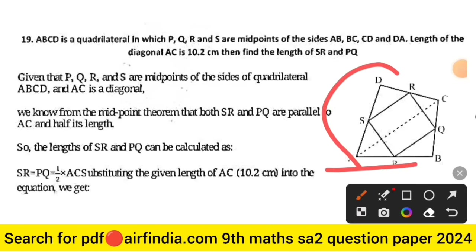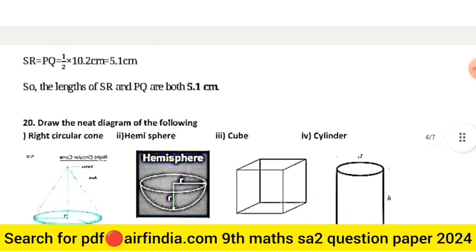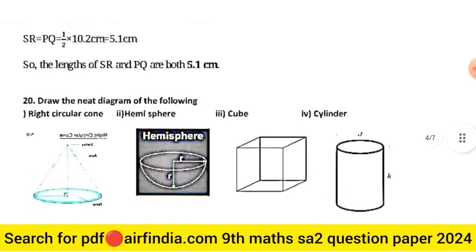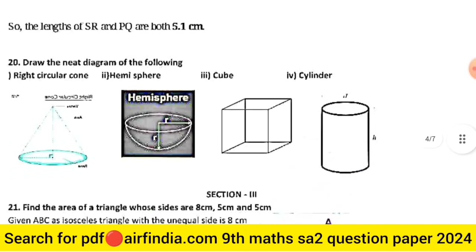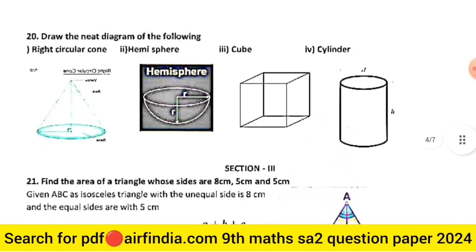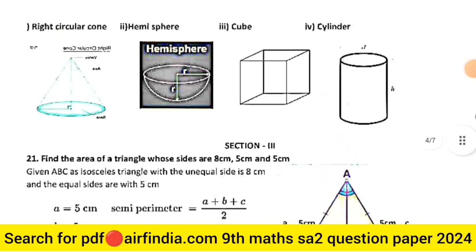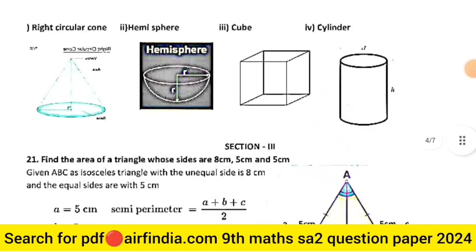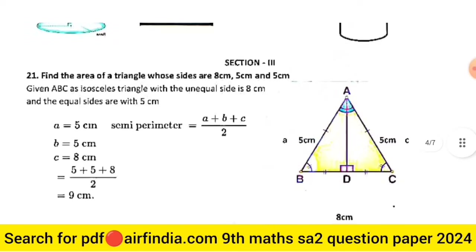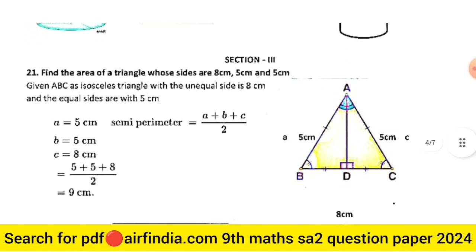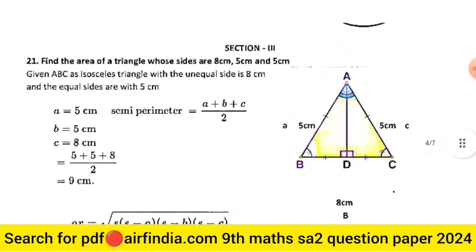Question 19: a diagram is provided in the exam paper — the full solution is shown here. Question 20: draw neat diagrams of cube, cylinder, hemisphere, and right circular cone — the diagrams for all four are shown.